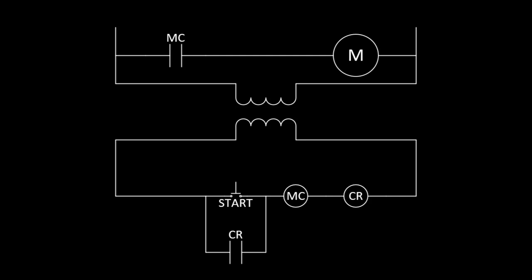Now on to the three-wire circuit. The three-wire circuit has an additional coil and contact, labeled Control Relay CR. The Control Relay coil is in series with the switch, and the Control Relay contact is in parallel with the switch.